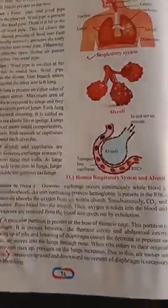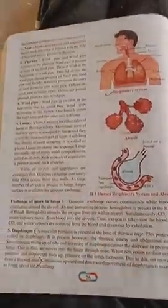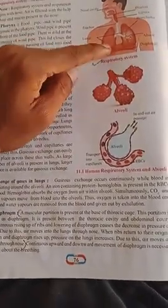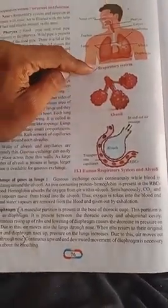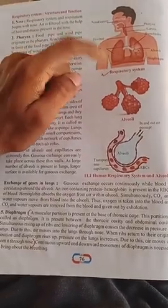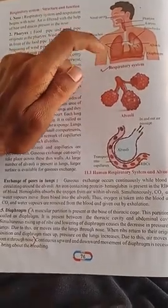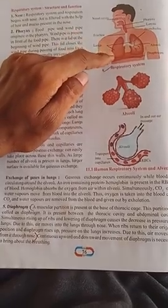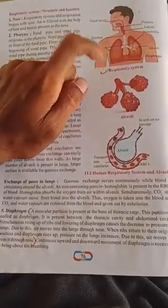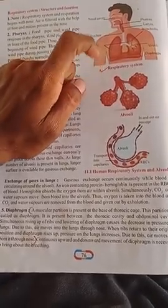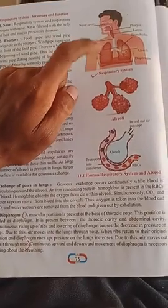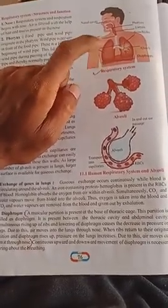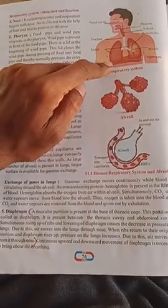The walls of the alveoli and capillaries are extremely thin, so gaseous exchange can easily take place across them. Gaseous exchange occurs while blood is continuously circulating around the alveoli. An iron-containing protein called hemoglobin is present in the red blood cells and absorbs oxygen from the air within the alveoli.